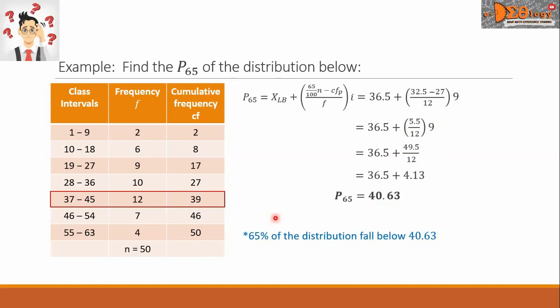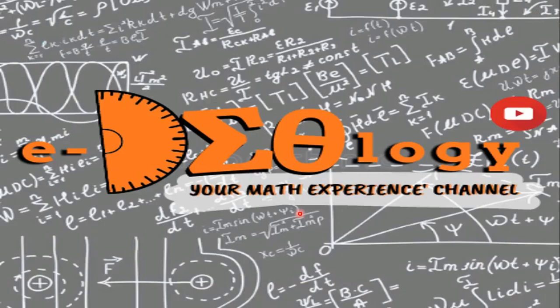We say that 65% of the distribution fall below 40.63. This is our final answer. I hope you learned something from this video. See you again next time.